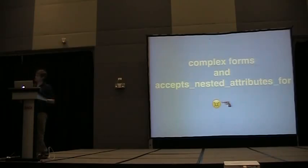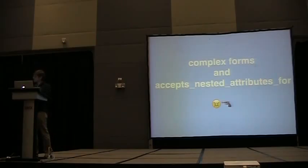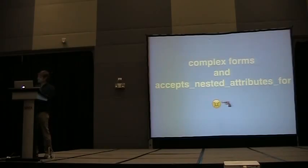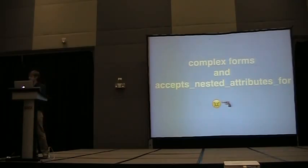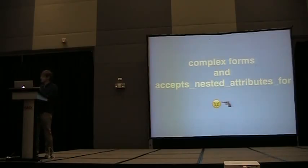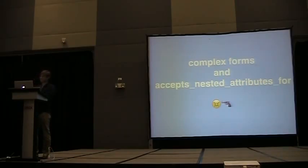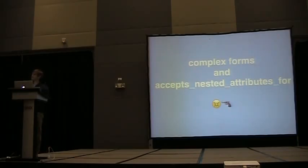I have a question. What do you do when you have to have one form that accepts different ones? Do you use accepts_nested_attributes_for? What's a good case for when you have to use it — when you have to make a form that accepts the author and the books? Oh, this is what you use.